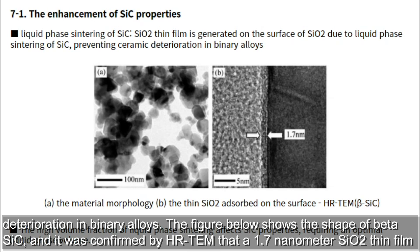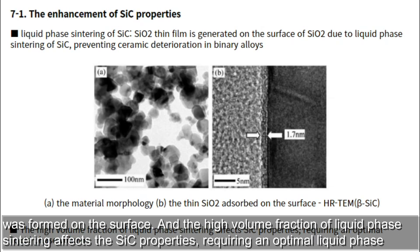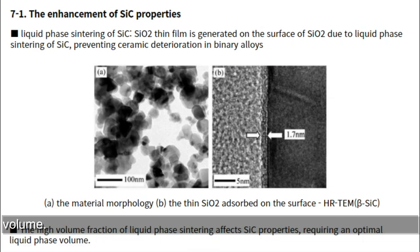The figure below shows the shape of beta-SiC. It was confirmed by HRTEM that a 1.7 nanometer SiO2 thin film was formed on the surface. The high volume fraction of liquid phase sintering affects the SiC properties, requiring an optimal liquid phase volume.